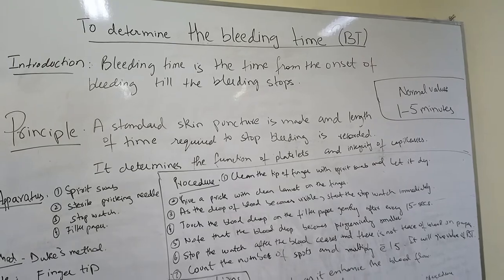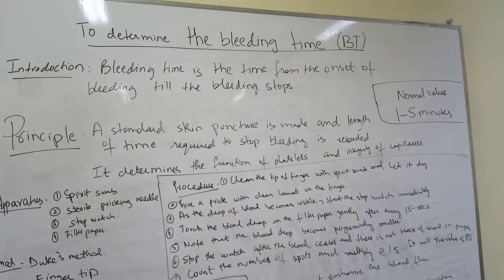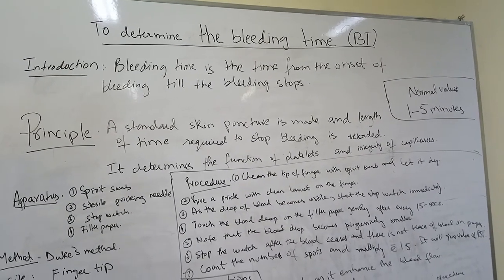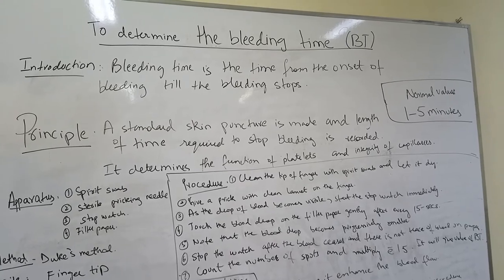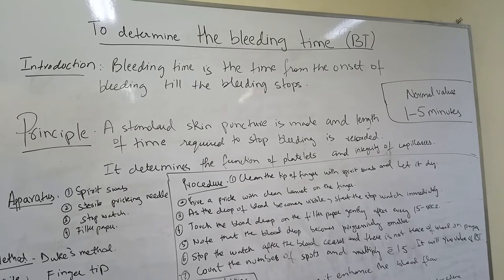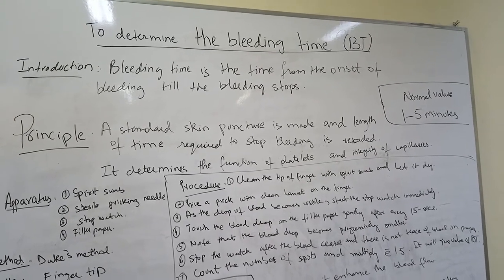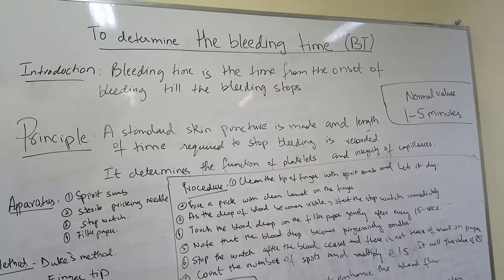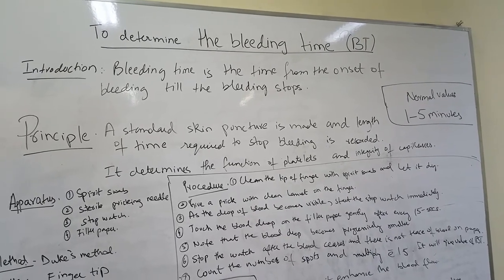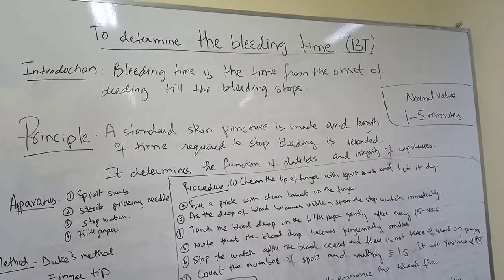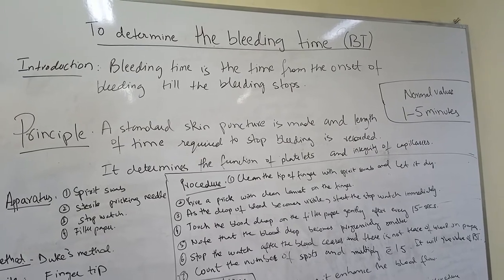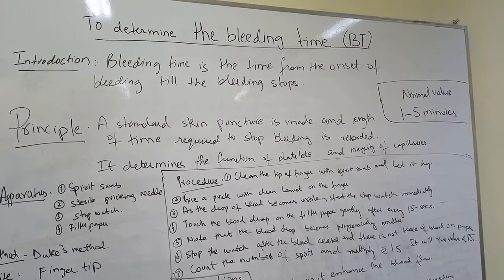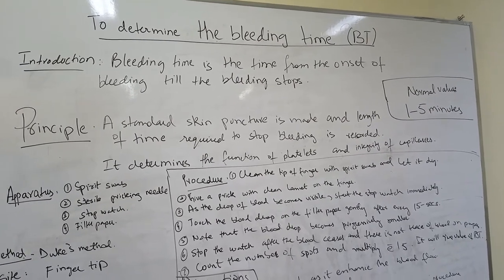Today we will demonstrate how to determine the bleeding time. One should know what bleeding time is. Bleeding time is the time from the onset of bleeding until the bleeding stops. It depends upon the effectiveness of vasoconstriction and platelet function. The normal value of bleeding time is on average 1 to 5 minutes.